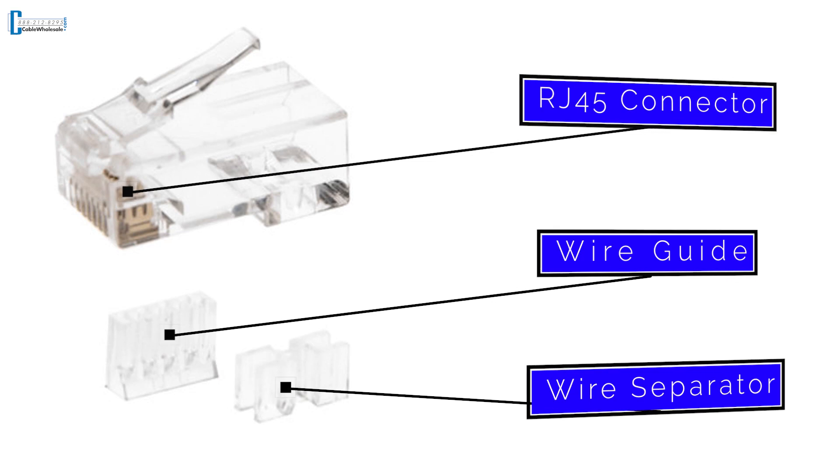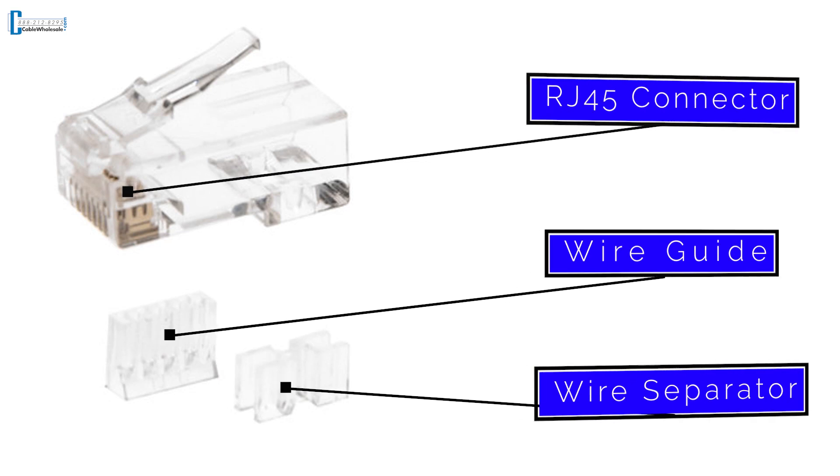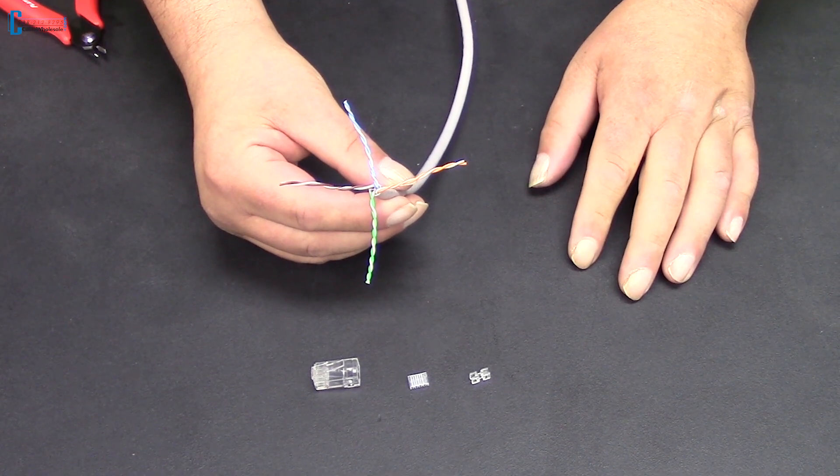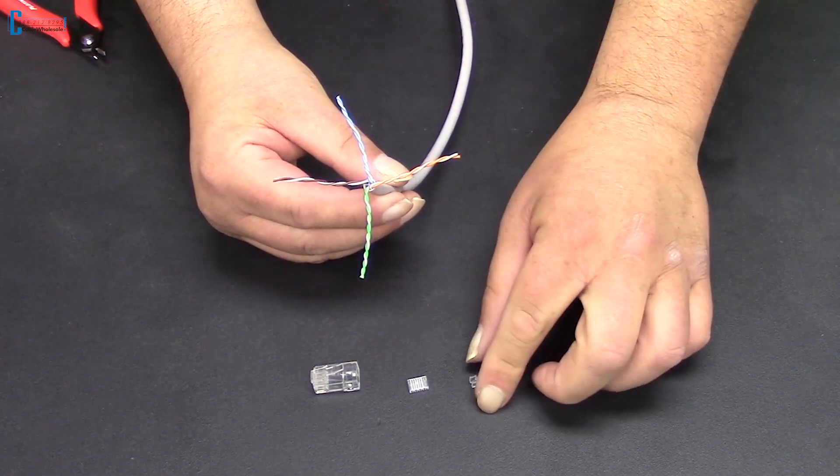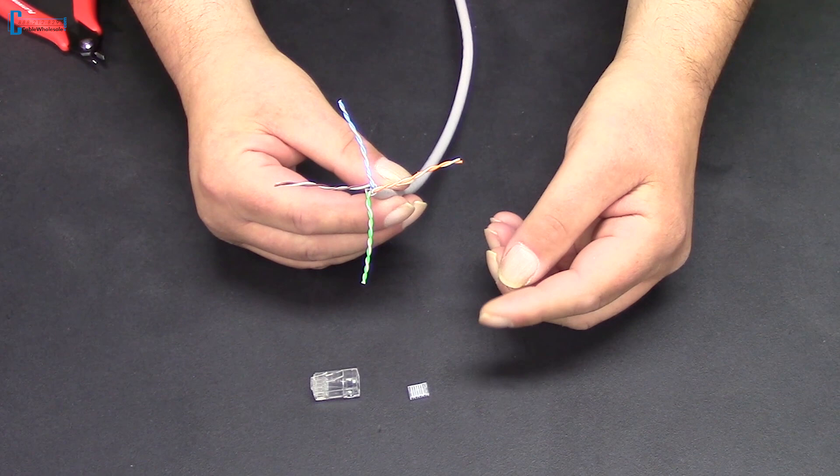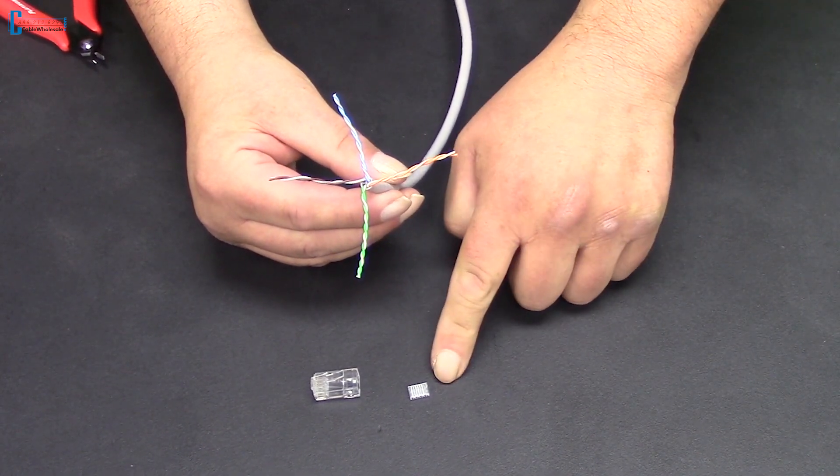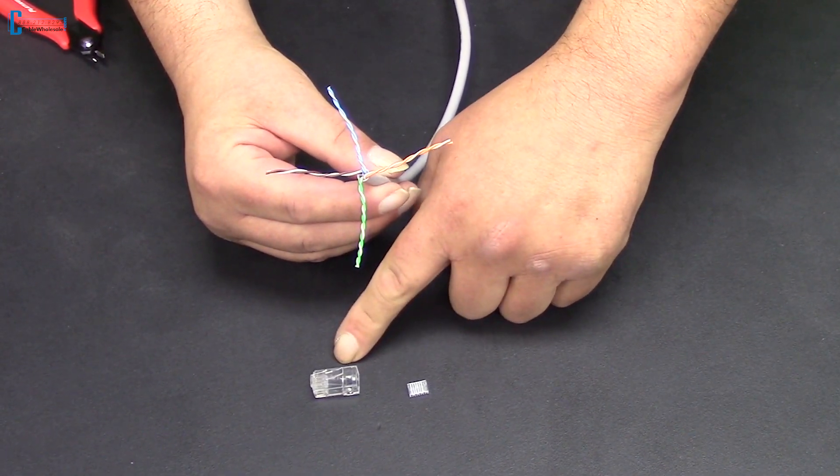Let's take a look at the RJ45 ends now. This is a three piece set; it really helps to keep you from making mistakes. The first part is the wire separator. Next is the wire guide. Lastly is the RJ45 connector.